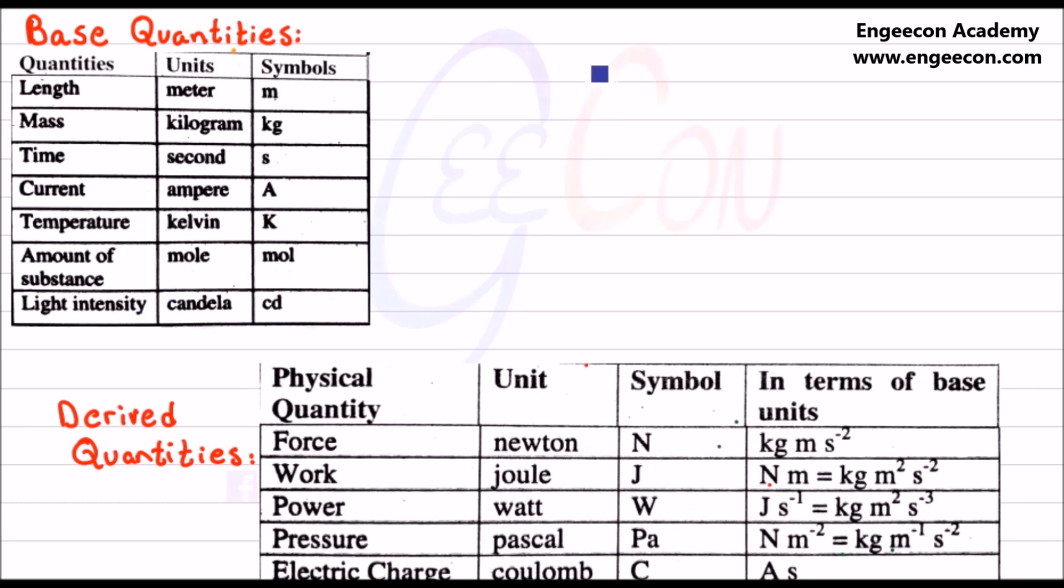Let's explain velocity as a derived quantity. As we know that velocity is a time rate of change of displacement, where s displacement represents the length and t represents the time. So both length and time are base quantities which generate a derived quantity velocity.